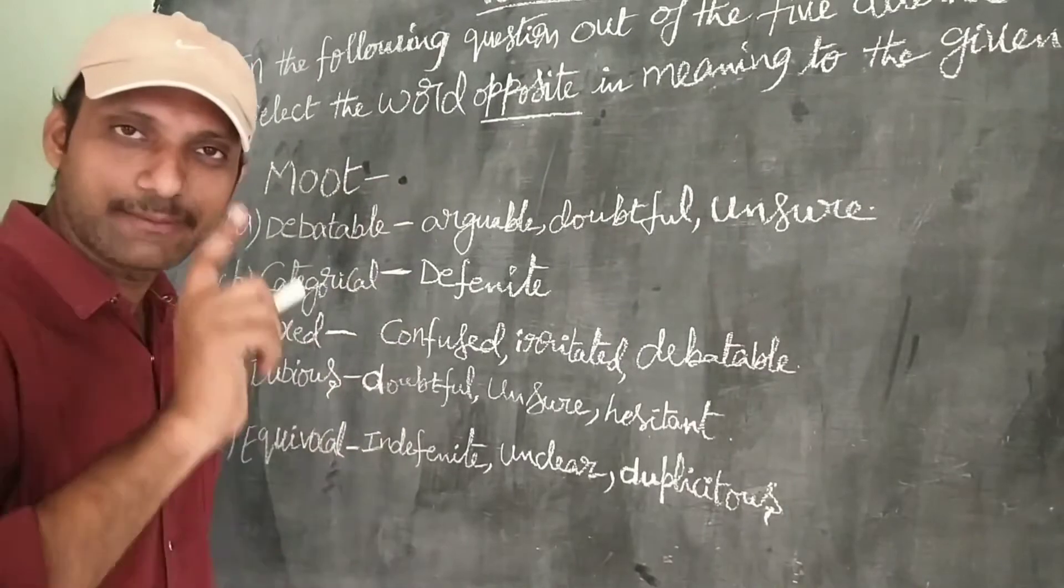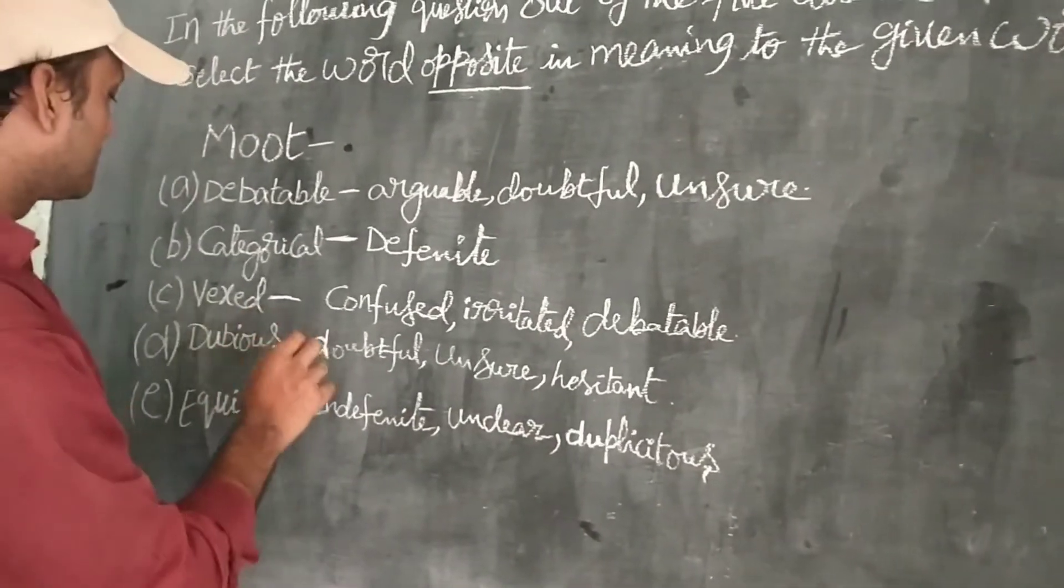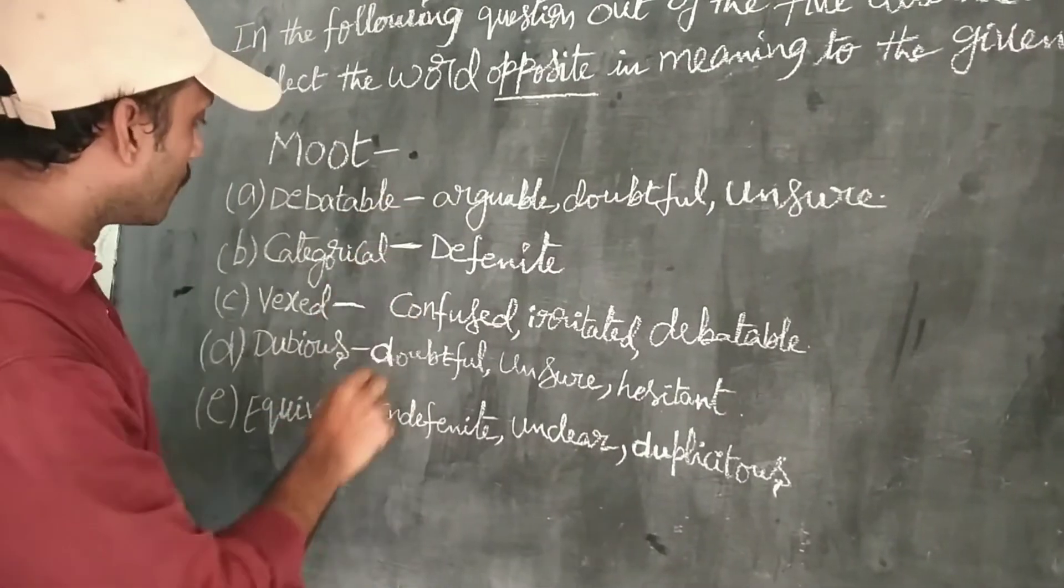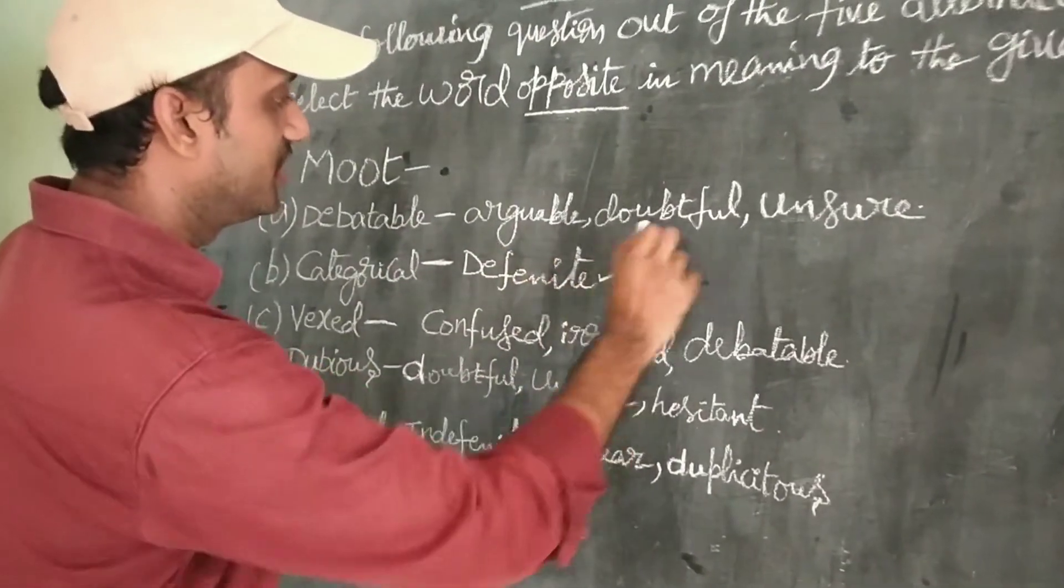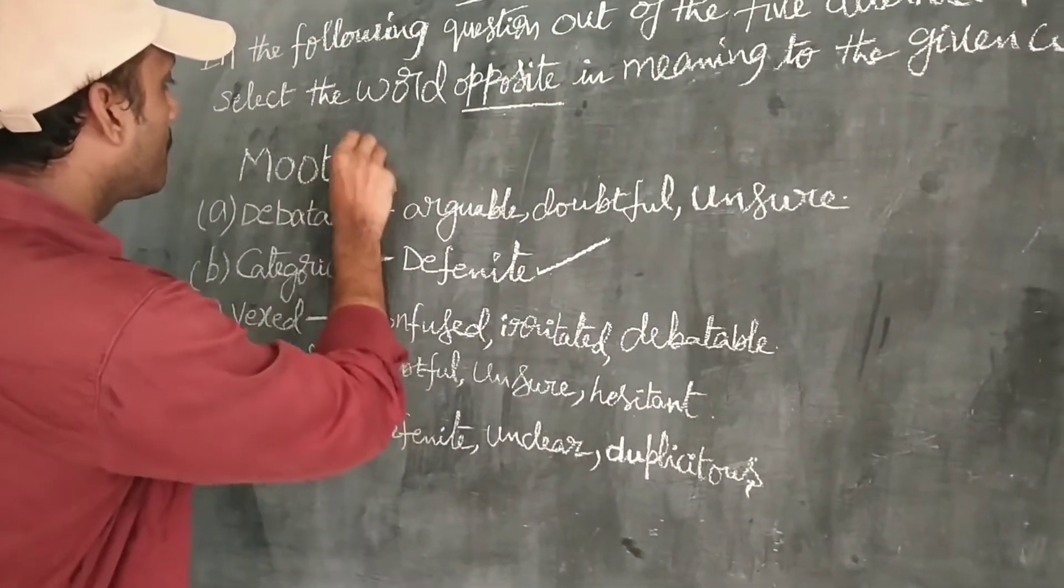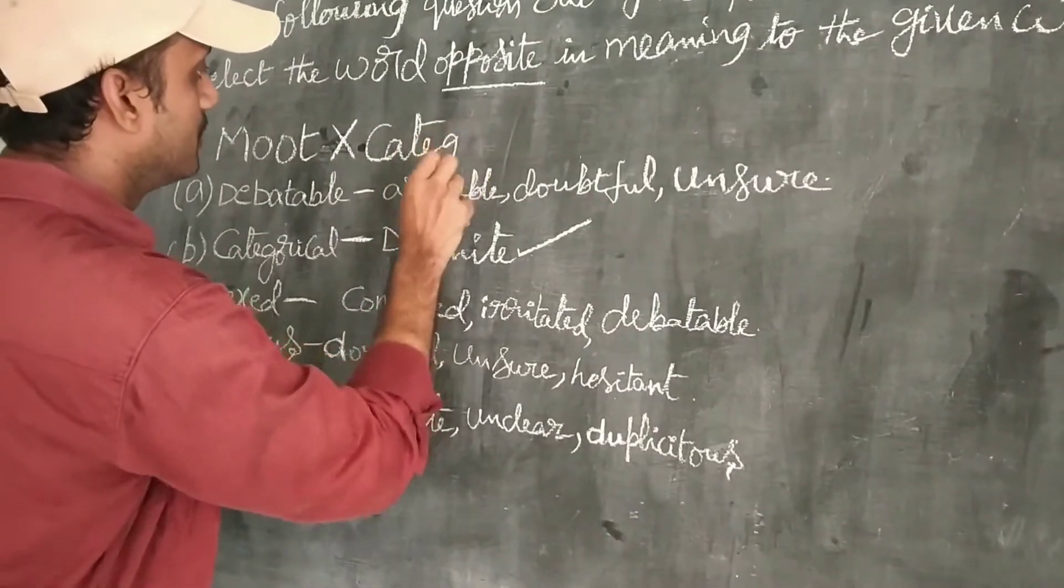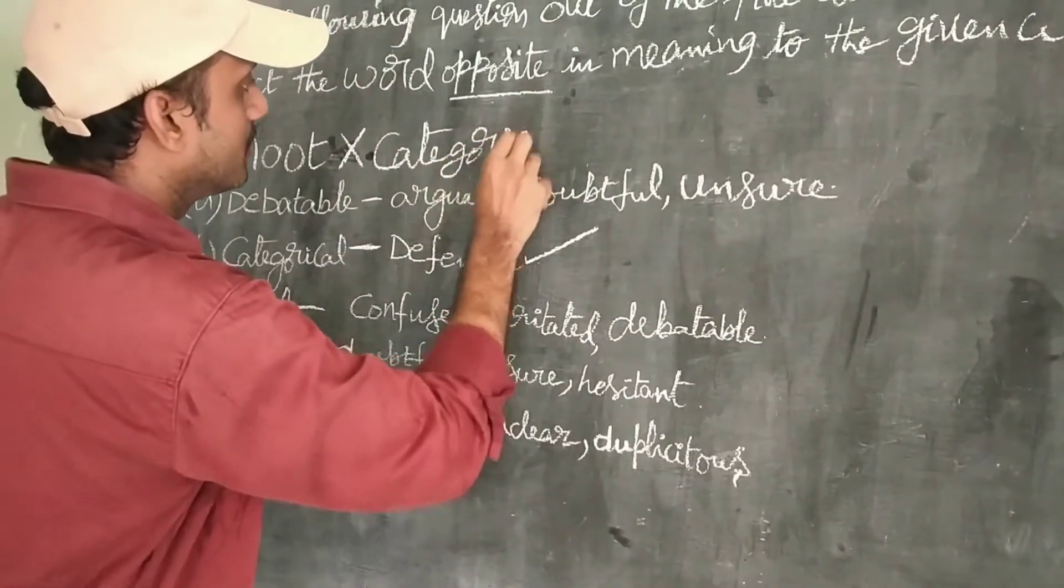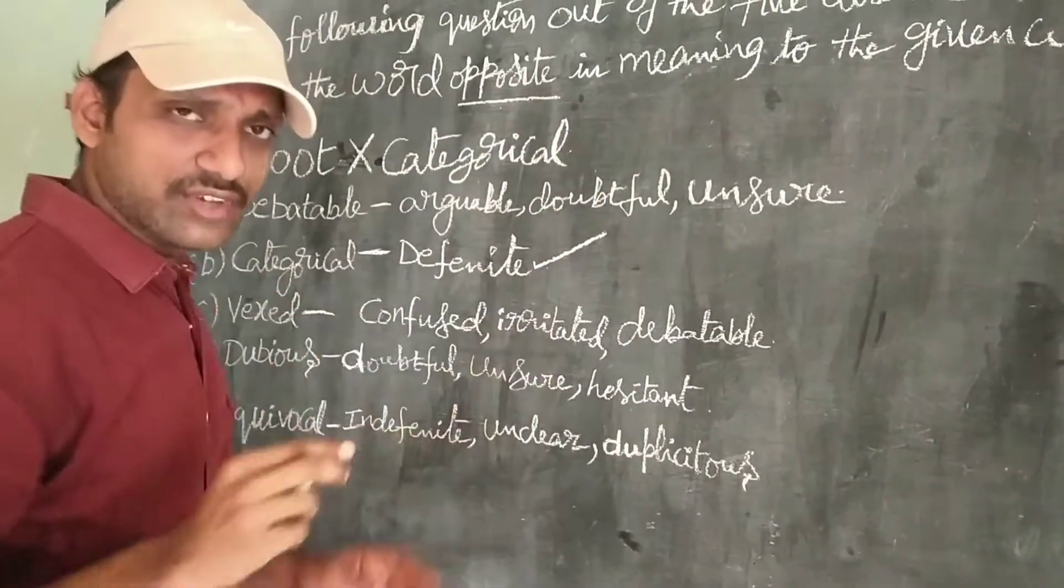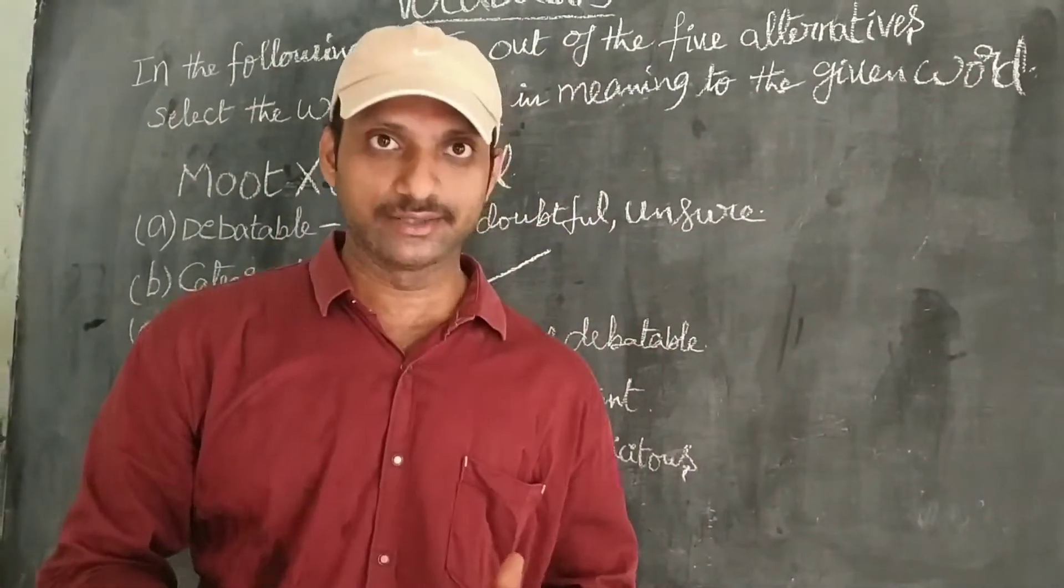Option verification method is the best one. If you try to know what are the meanings, what are the similar meanings for these four, it is different, it is the odd one. So, it is the opposite to moot, categorical. In this way, we have to verify the option through option verification method.